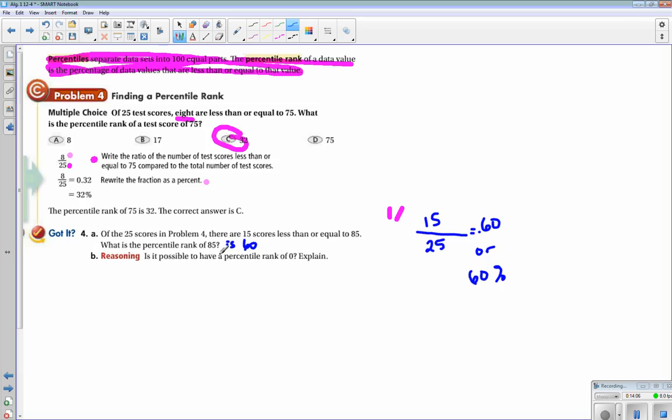Is it possible to have a percentile rank of 0? And explain. So I at least have to have one person at 1%, so you can't have a percentile rank of 0.